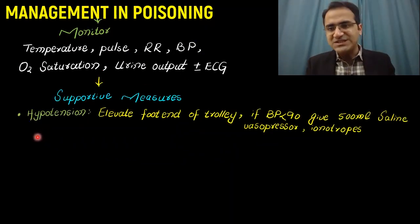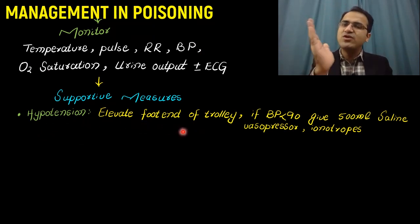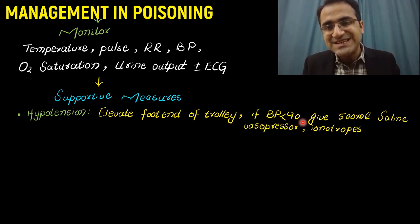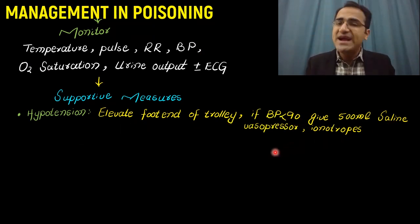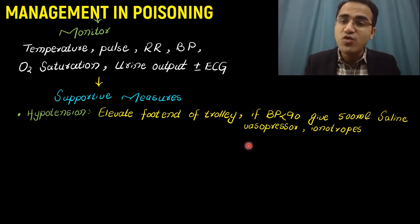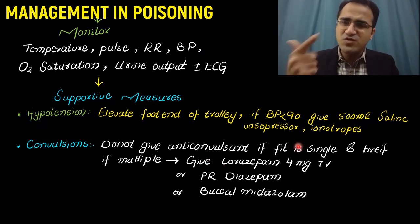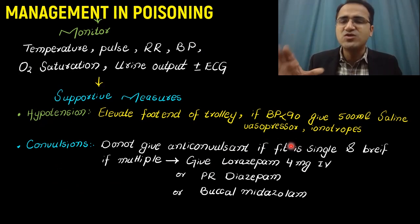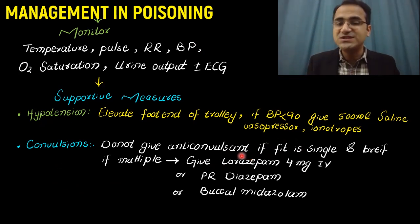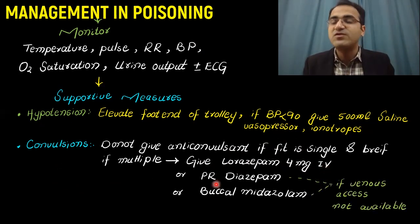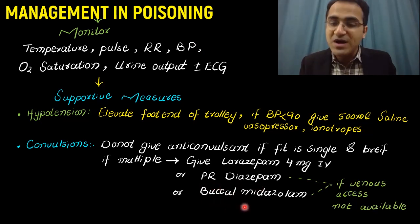There are certain supportive measures. If the patient is developing hypotension, elevate the foot end of the trolley for more venous return. If systolic blood pressure is less than 90, give 500 ml of normal saline. For recurrent hypotension, go for vasopressors and inotropes. For convulsions: a single brief seizure in poisoning may not need anticonvulsants, but for recurrent multiple seizures give lorazepam IV. If IV access is unavailable, give rectal diazepam or buccal midazolam.